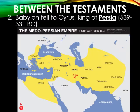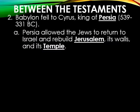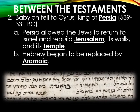Babylon eventually fell to Cyrus, king of Persia — interestingly, Cyrus was prophesied of in the book of Isaiah as the man who would take over Babylon. Persia actually allowed the Jews to return to Israel and rebuild Jerusalem, its walls, and its temple. During this period, Hebrew began to be replaced by the language called Aramaic. They are very similar languages — if you learn Hebrew, it's very easy to learn Aramaic.